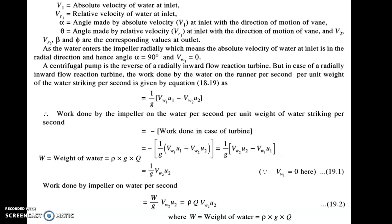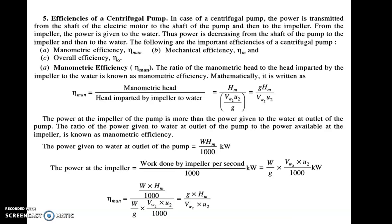You have to remember this sequence: the first one is shaft power which is input power, then there is impeller power which is intermediate power, and then there is manometric power which is the output power. The hydraulic efficiency in the case of a turbine is replaced by manometric efficiency. In this case the hydraulic efficiency is called manometric efficiency. Then there is mechanical efficiency, which is same and is associated with runner power and shaft power, and overall efficiency is the product of these two — manometric and mechanical efficiency.